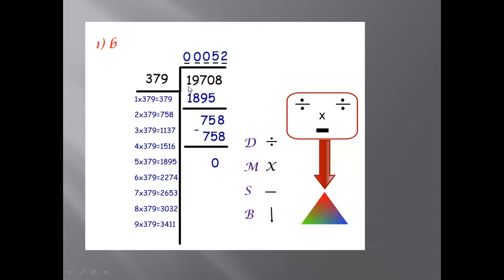We compare, we take dividend 1,970 divided by this number. What number is nearest to 1,970? It's 5. So up the 5, down 1,895. Subtract, it will be 75.